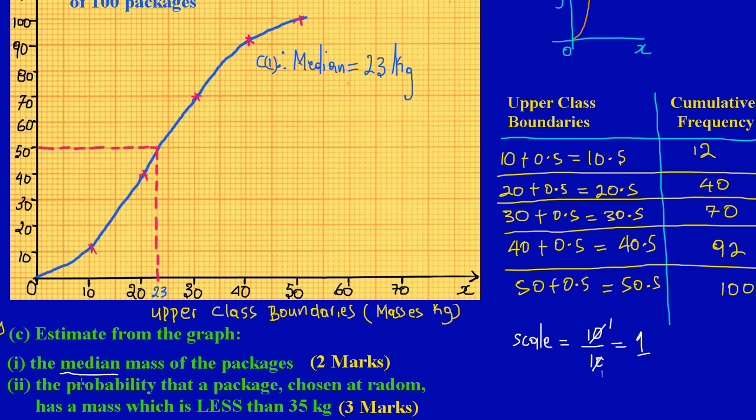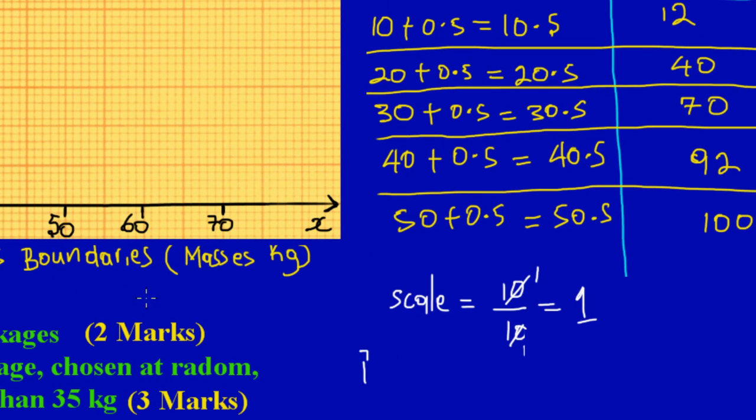Let's finish up this question quickly. Part 2, they're asking us to find the probability that a package chosen at random has a mass which is less than 35 kilograms. That's another easy three marks.